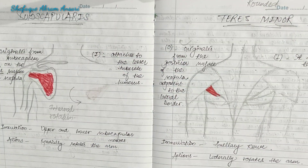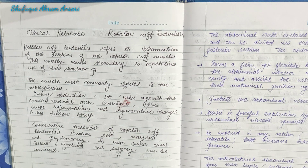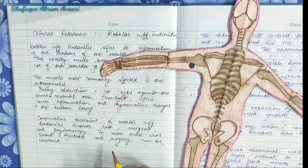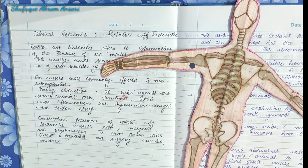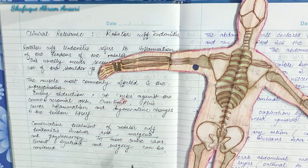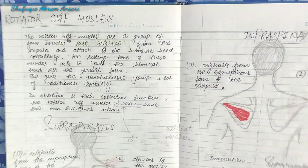The most common cause of shoulder pain is rotator cuff tendinitis, which refers to inflammation of the tendons of the rotator cuff muscles. This usually occurs secondary to repeated use of the shoulder joint. The most commonly affected tendon is the supraspinatus, which impinges against the coracoacromial arch during abduction, causing inflammation and degenerative changes. Conservative treatment involves rest, analgesia, and physiotherapy. In severe cases, steroid injection and surgery can be considered.